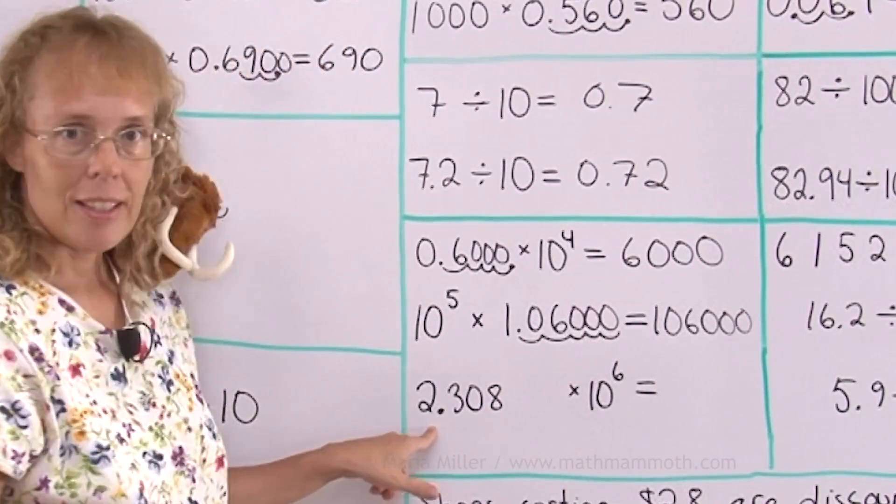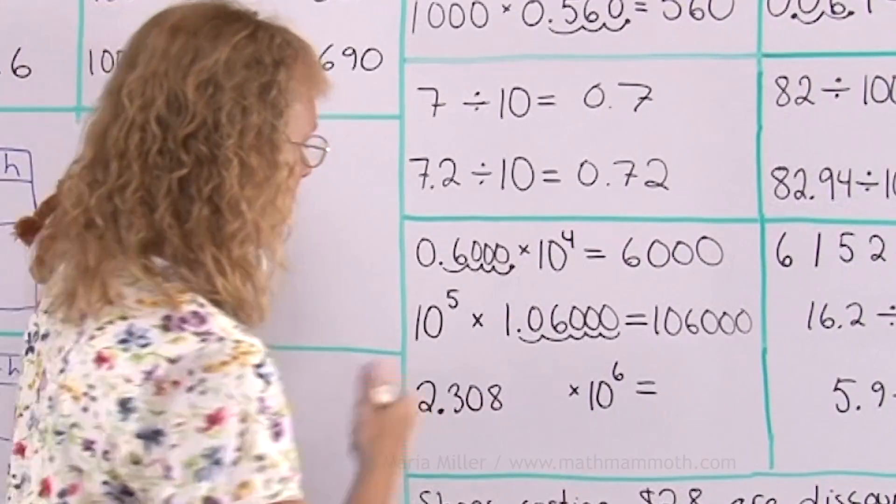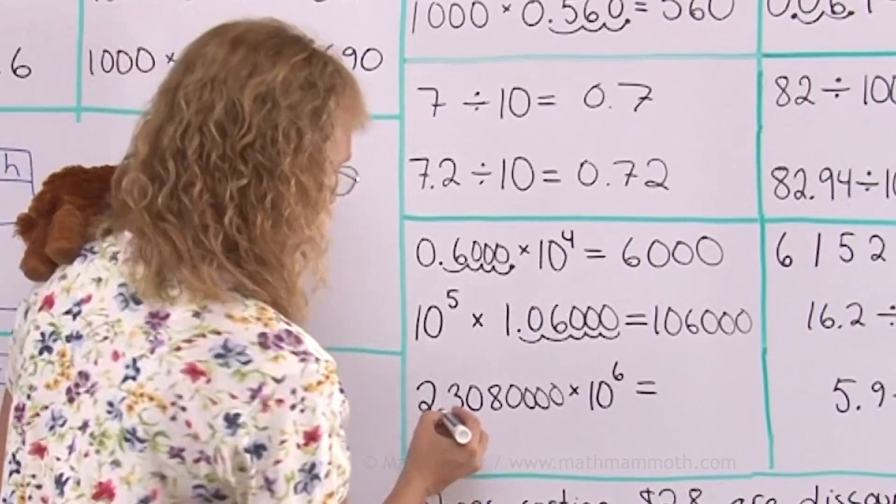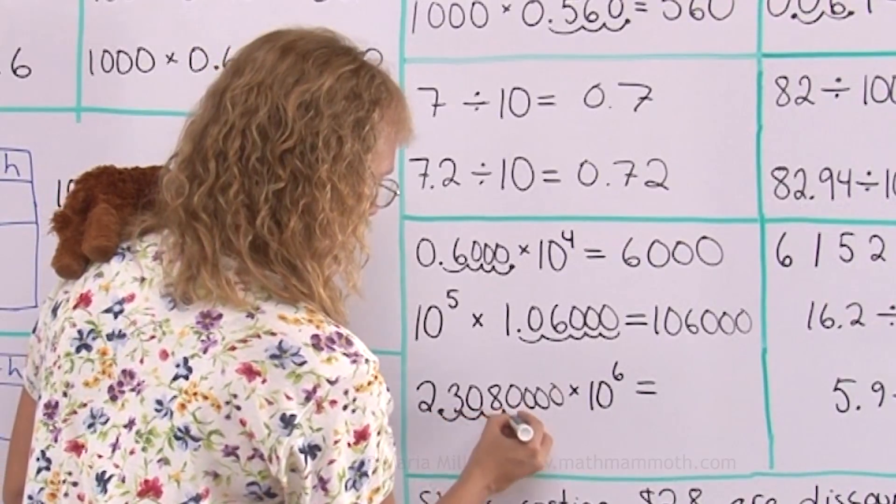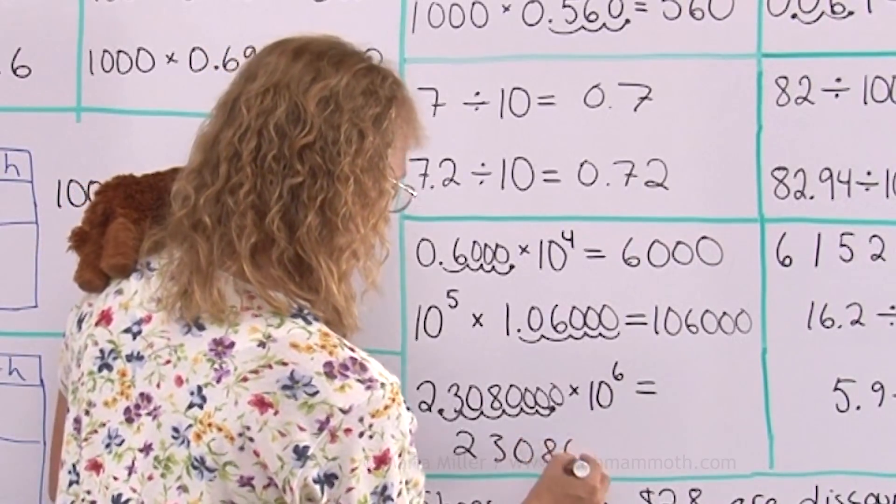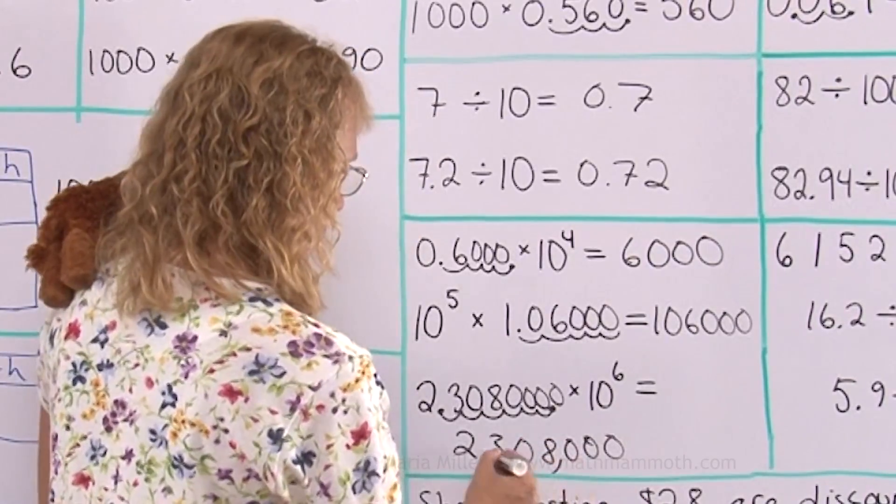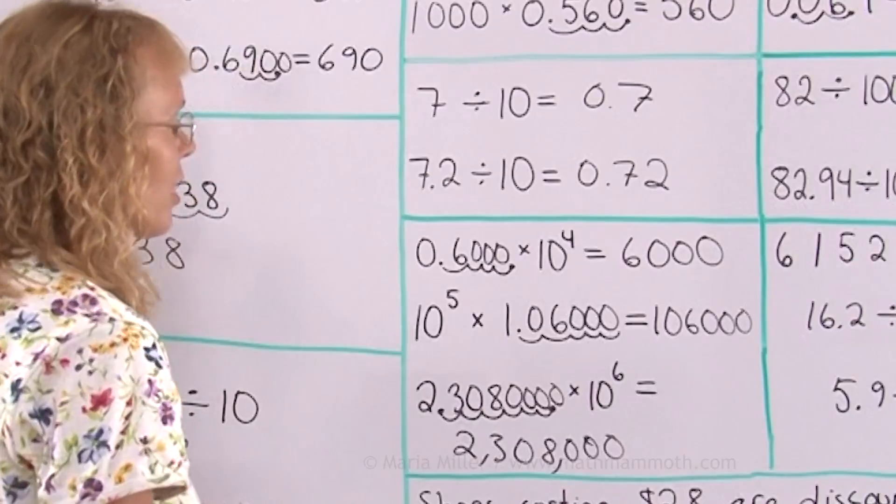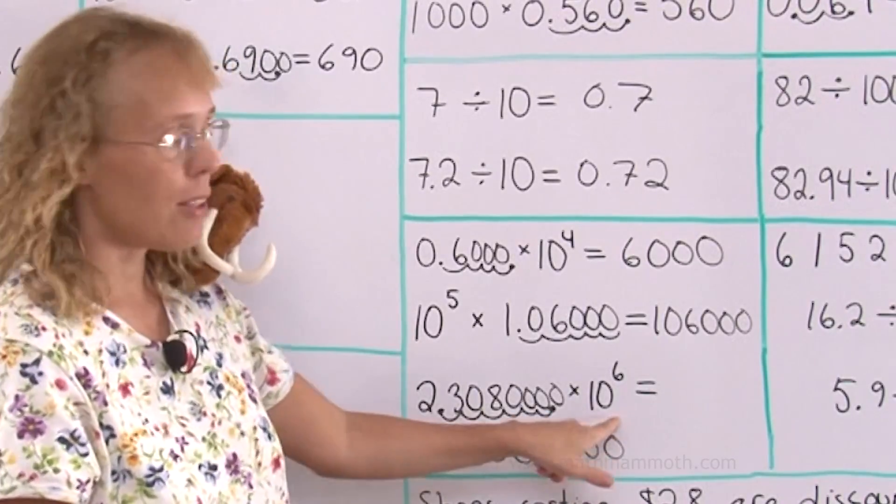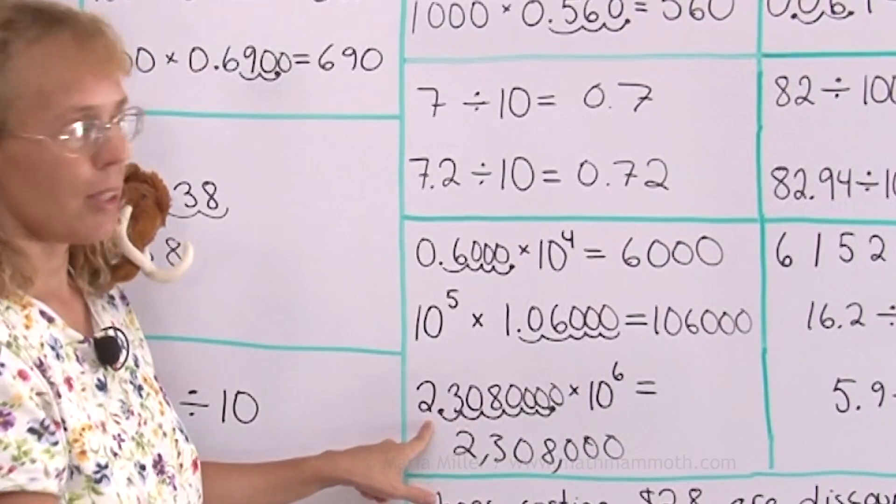Again I'm gonna multiply it by a million. Let me put some zeros here. Make sure I can move my decimal point six steps easily. Two, three, zero, eight, zero, zero, zero. What did it become? Two million, three hundred and eight thousand. That makes sense because this is a million and this was two point something.